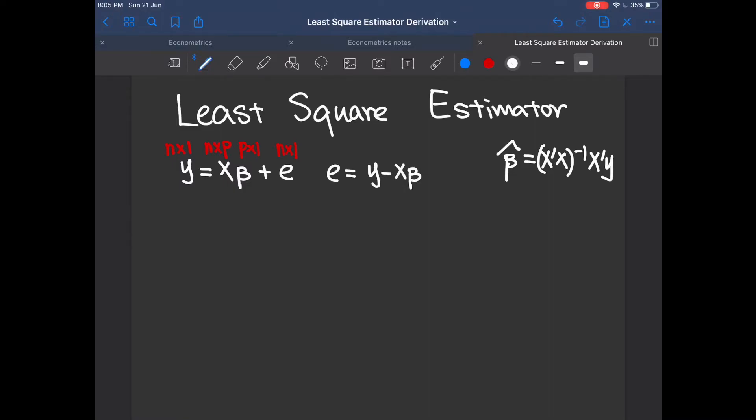So the least square estimator minimizes e transpose e. We actually do this minimization with respect to beta.